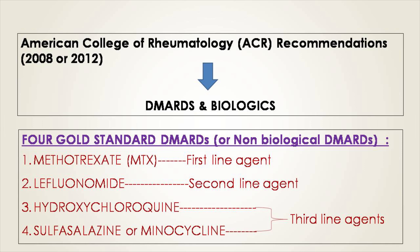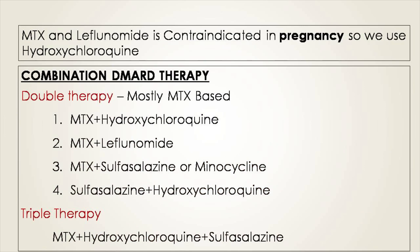Methotrexate is given as the first-line agent, leflunomide as the second-line agent, and hydroxychloroquine and sulfasalazine as third-line agents. When a patient is not responding to or is contraindicated to methotrexate, you give leflunomide. Both methotrexate and leflunomide are contraindicated in pregnancy, so in those situations we give hydroxychloroquine.